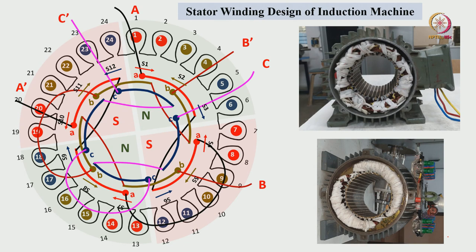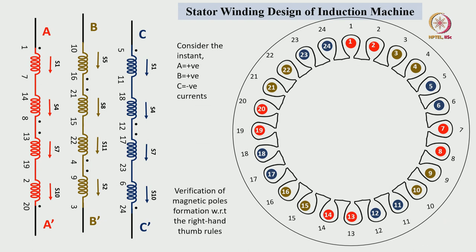This is the three-phase winding connection with the machine winding finishing with threading and other things. Now let us verify by considering an instant where A phase current is positive, B phase current is positive, and C phase current is negative — whether the magnetic poles are forming correctly with these winding connections.